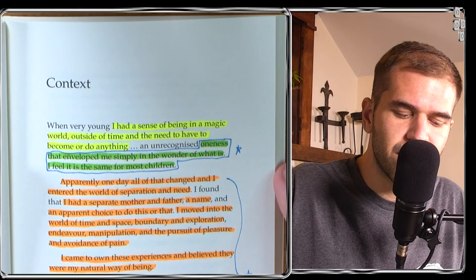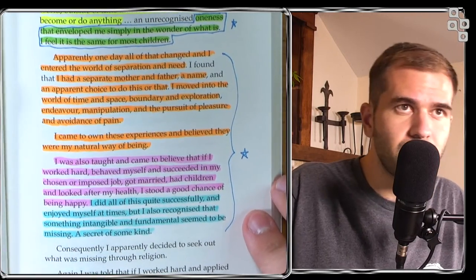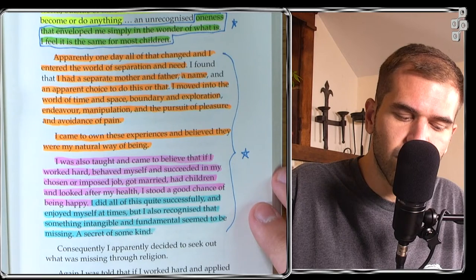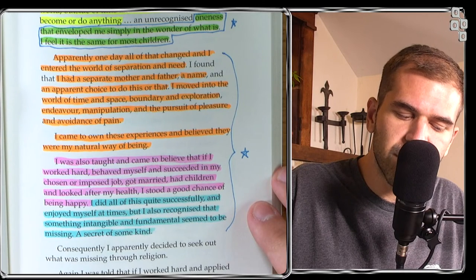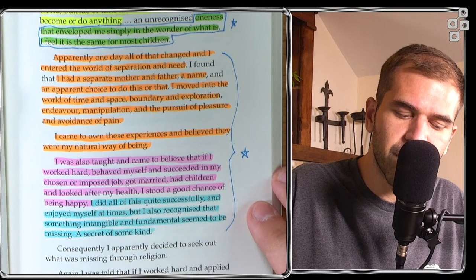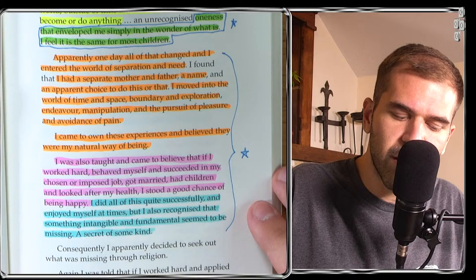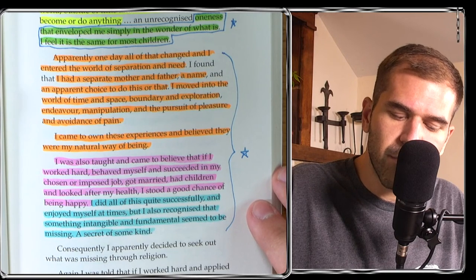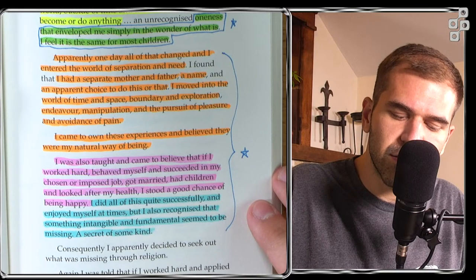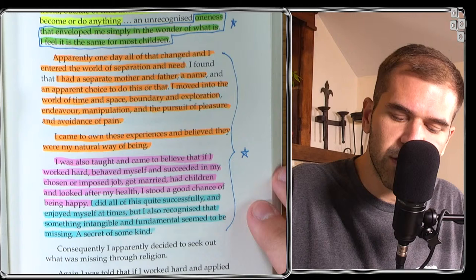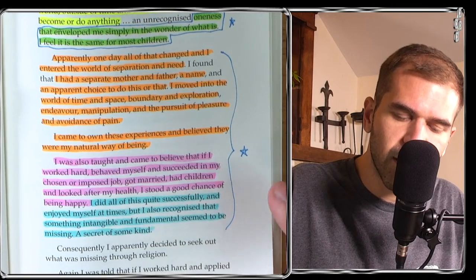Oneness that enveloped me simply in the wonder of what is. I feel it is the same for most children. Apparently, one day, all of that changed and I entered the world of separation and need. I had a separate mother and father, a name and a parent choice to do this or that. I moved into the world of time and space, boundary and exploration, endeavor, manipulation, and the pursuit of pleasure and avoidance of pain. I came to own these experiences and believe they were my natural way of being. I was also taught that if I worked hard, behaved myself, and succeeded in my chosen job, got married, had children, and looked after my health, I stood a good chance of being happy. I did all of this quite successfully but I also recognized that something intangible and fundamental seemed to be missing, a secret of some kind.